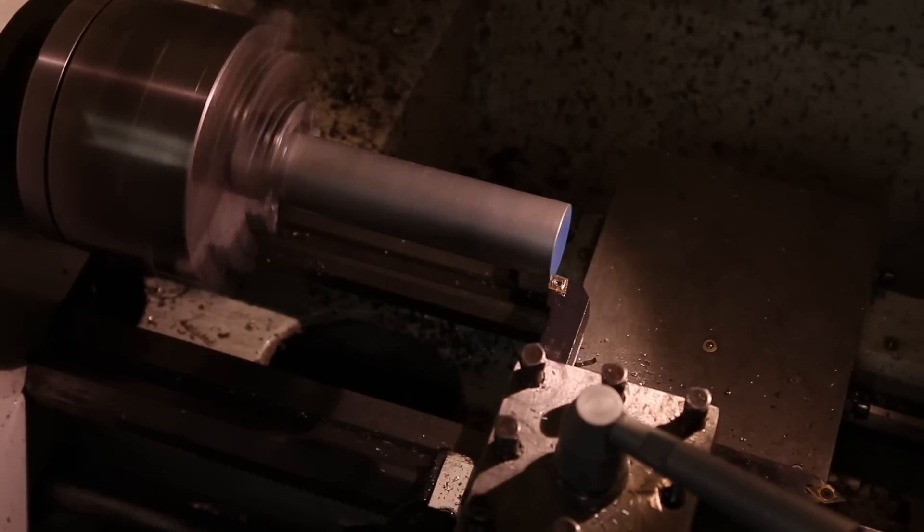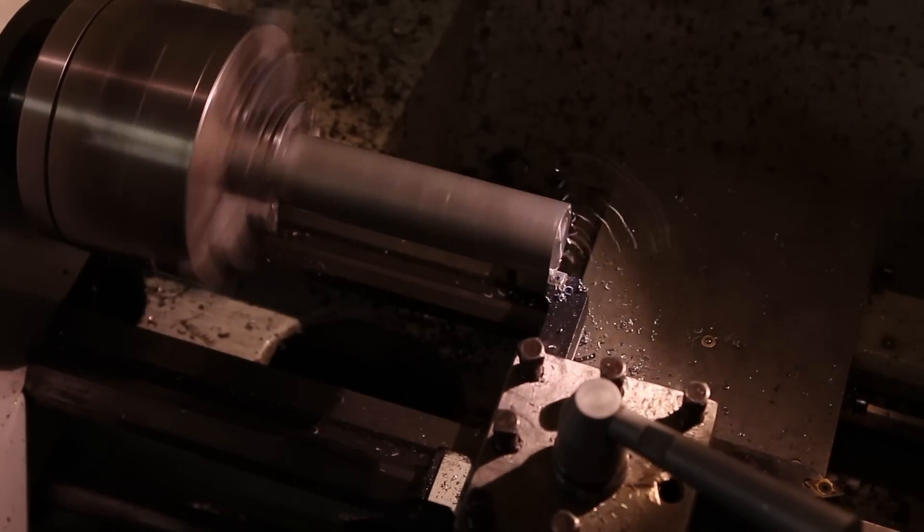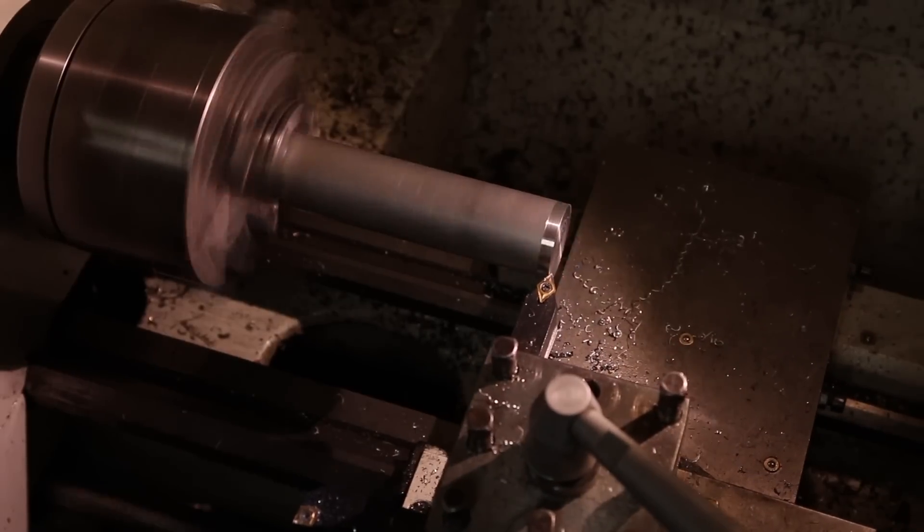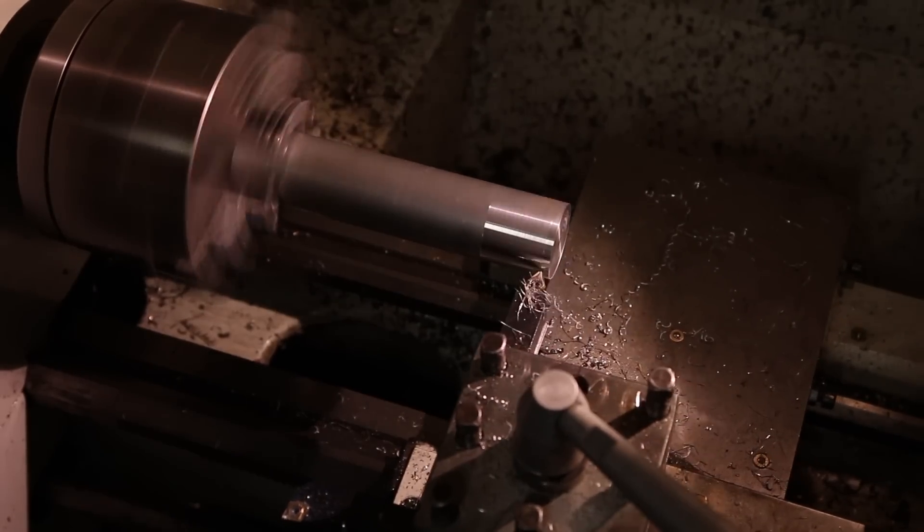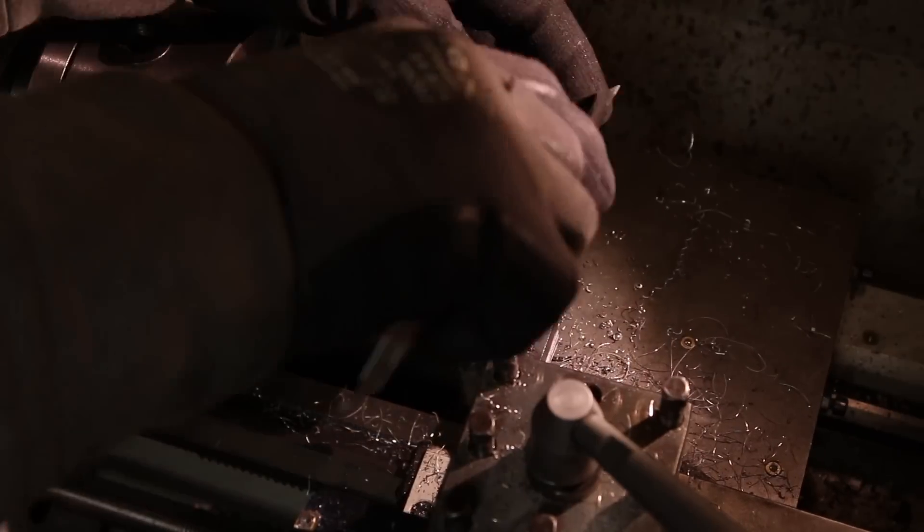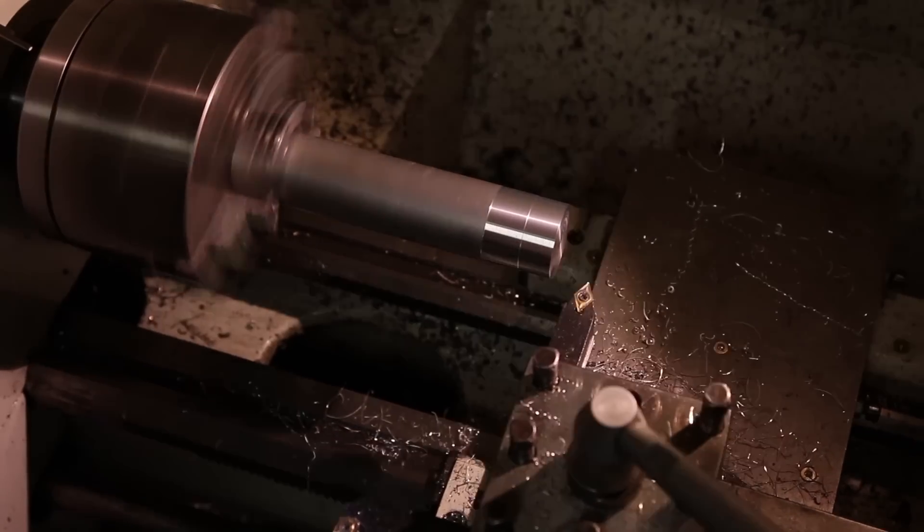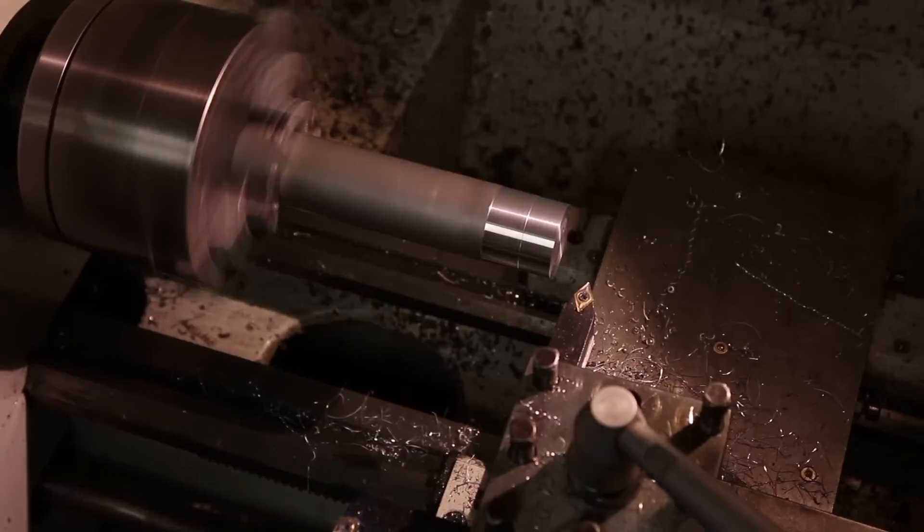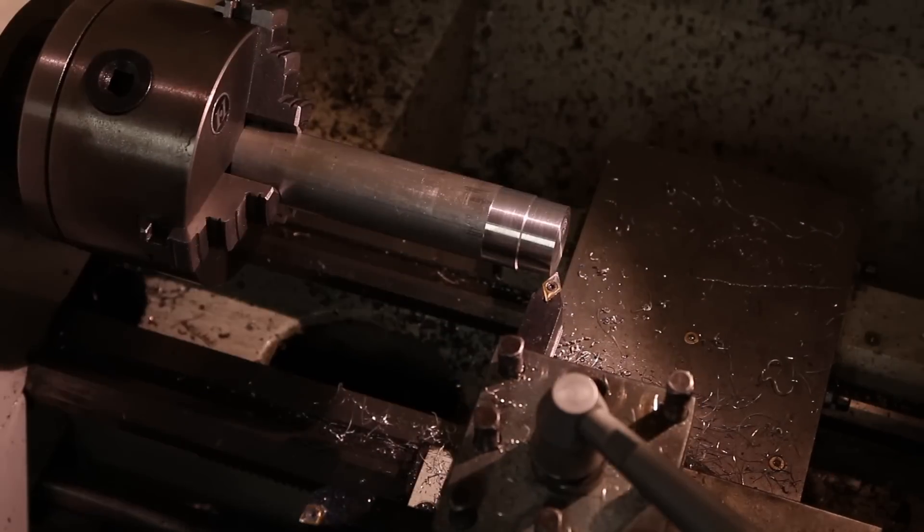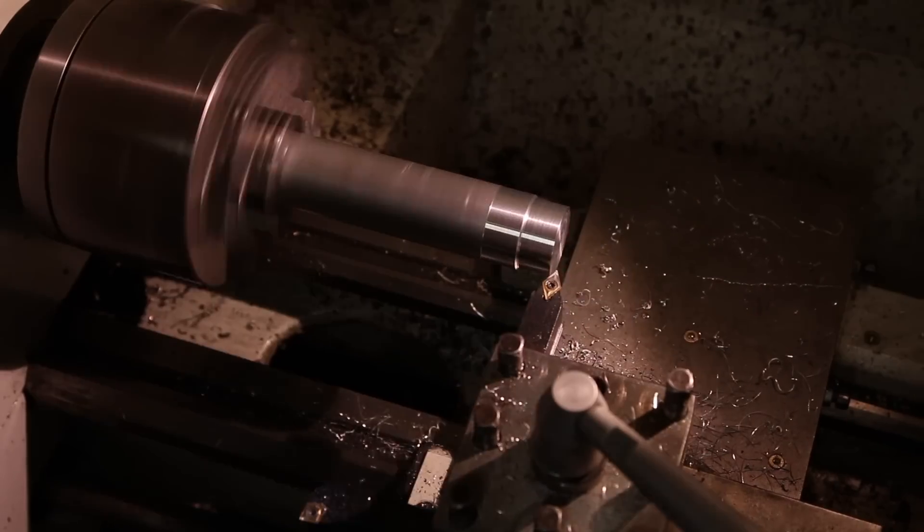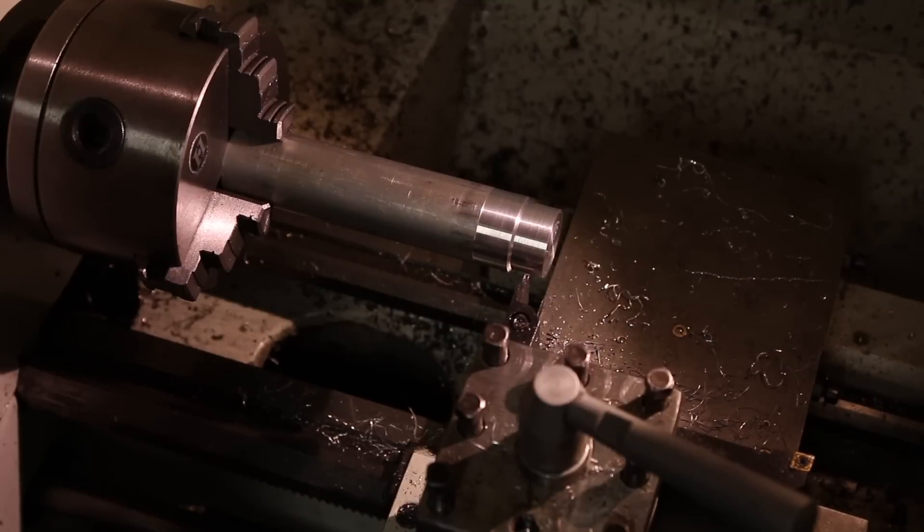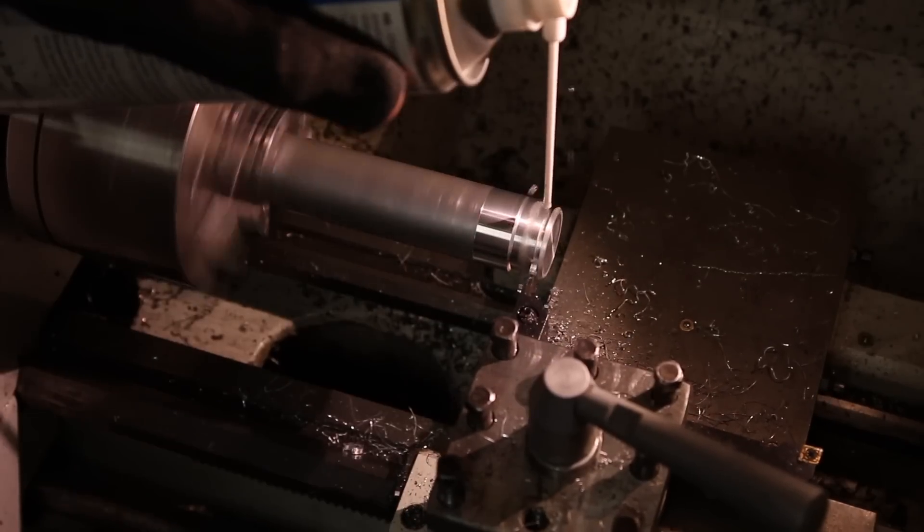Now we're going to make the bulkhead for the rocket which is a plug for the front, and we're going to do this in aluminum. So I have some aluminum round stock here. It's 30 millimeters in diameter I think, and it cuts like butter. It's so easy to work with. So I'm just turning it down to the proper length and the proper thickness, or do you call that thickness? The proper diameter.